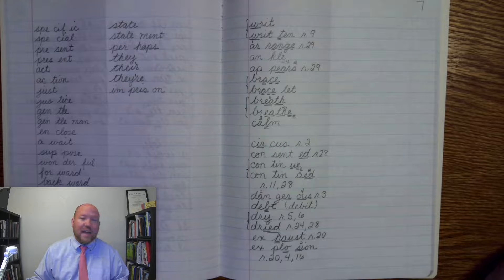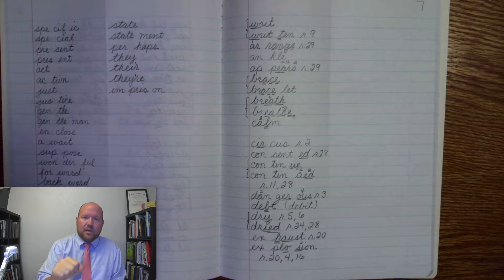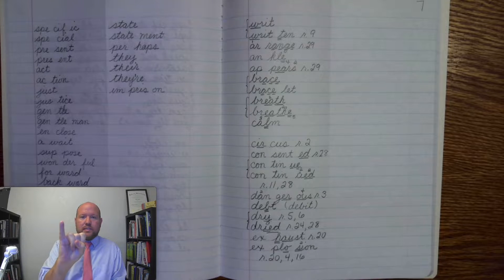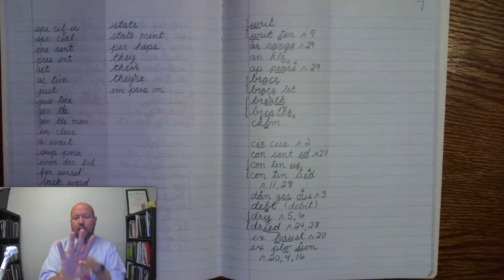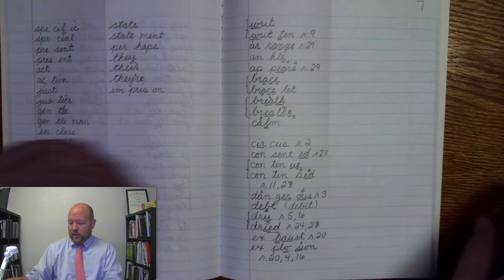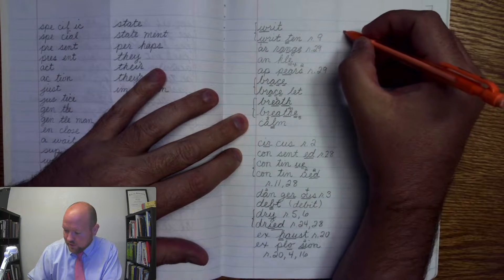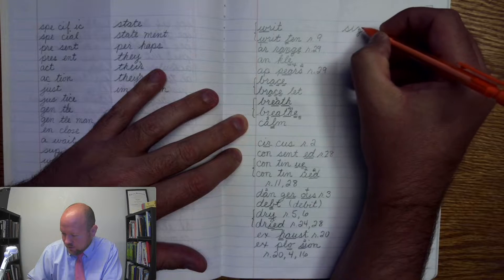The first word is the word size, like what is the size of something. Size. Base word size, S-I-Z-E. Size. Here we're going to use an S to make the S and a Z to make the Z. Okay, write the word size. S-I-Z-E. Size.